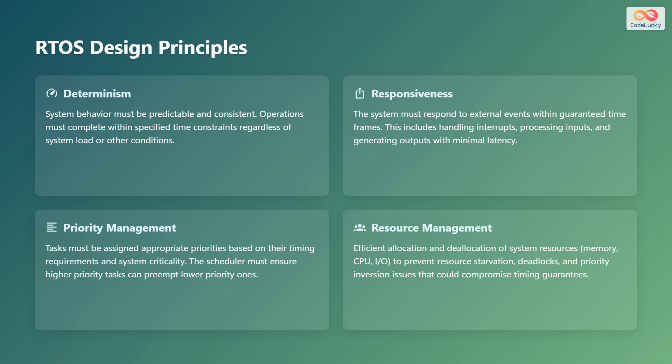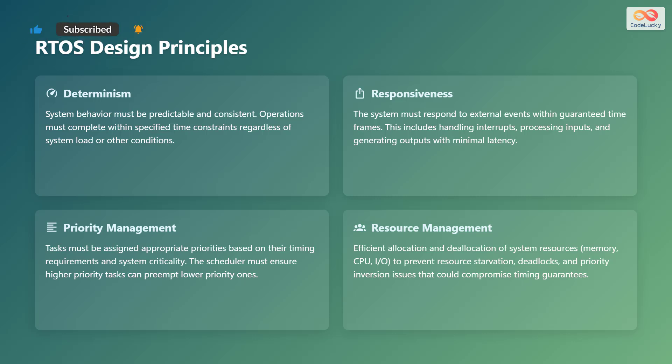Let's explore the core design principles that guide the creation of real-time operating systems. The first principle is determinism — system behavior must be predictable and consistent, and operations must complete within specified time constraints regardless of system load or other conditions. Next is responsiveness: the system must respond to external events within guaranteed timeframes, including handling interrupts, processing inputs, and generating outputs with minimal latency.